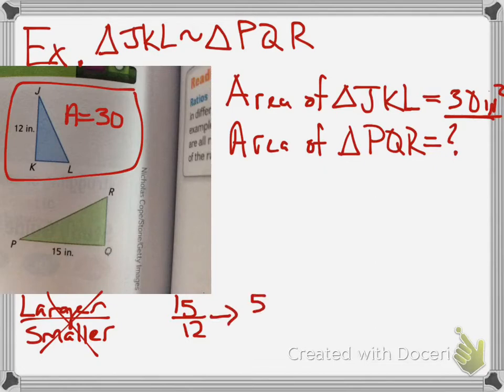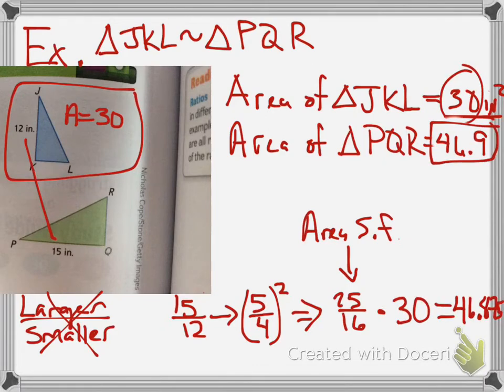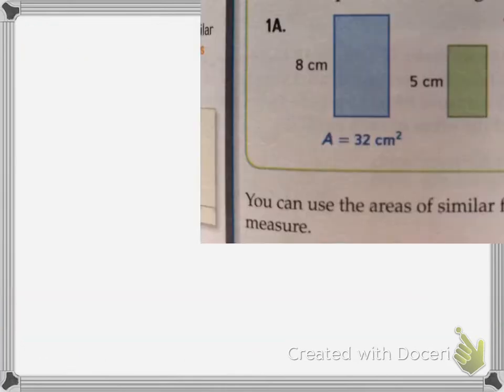So 15 over 12, and notice I'm just doing the sides. So that gives me that we're simplified to 5 fourths. Now if I square that, that means the areas are in a scale factor of 25 over 16 to each other. And all I got to do is take this scale factor right here for the areas, I'll call this the area scale factor, and multiply it to the area of the one that I was given, and I would get 46.875 or 46.9. And that should work pretty much every time.